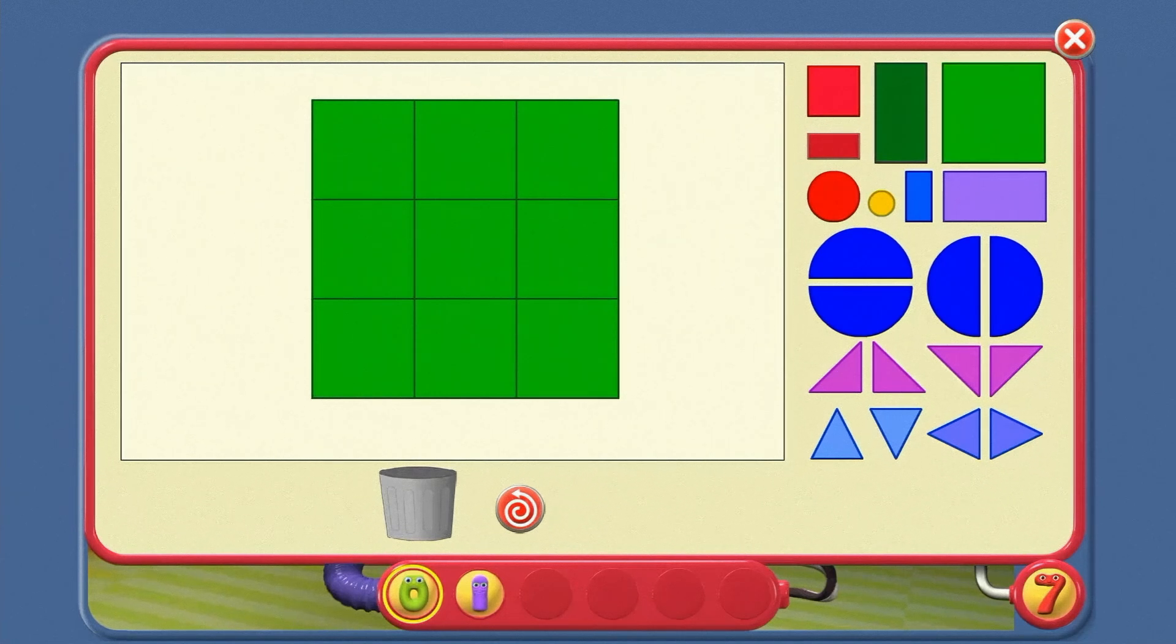But yes. Nine big squares make an enormous square. If you want to make squares, one, four and nine are the numbers you need.